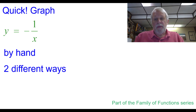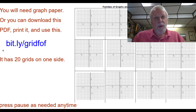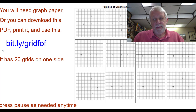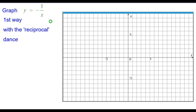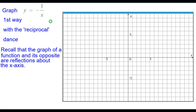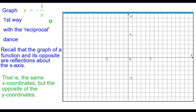This is part of the Family of Functions series. You will need graph paper, or you can download this PDF and print it. Press pause as needed anytime during the video. Please recall that the graph of a function and its opposite are reflections about the x-axis — they have the same x-coordinates but the y-coordinates are opposites of each other.